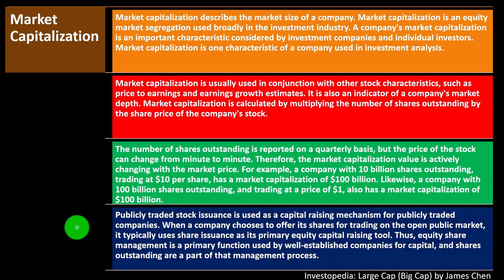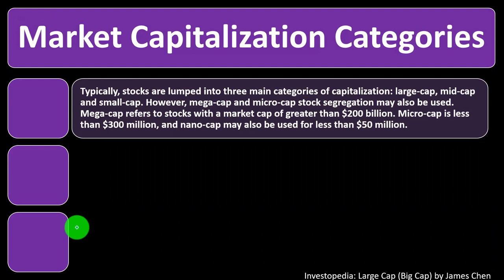Publicly traded stock issuance is used as a capital-raising mechanism for public companies. Many companies go public to generate capital through the issuance of equity — that money can then be used to build property, plant, and equipment, which, if wisely invested, generates future revenue and increases stock prices. When a company chooses to offer its shares on the open market, share issuance is its primary equity capital-raising tool. Equity share management is therefore a primary function for well-established companies.